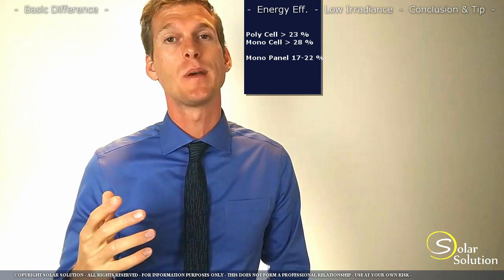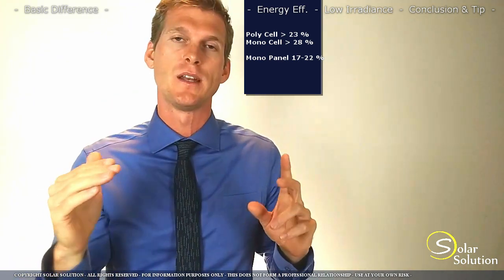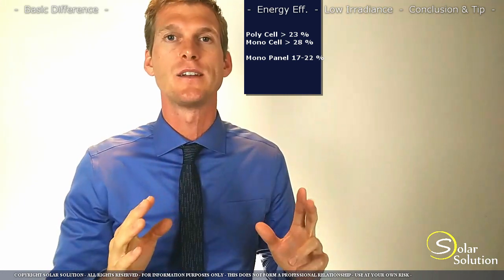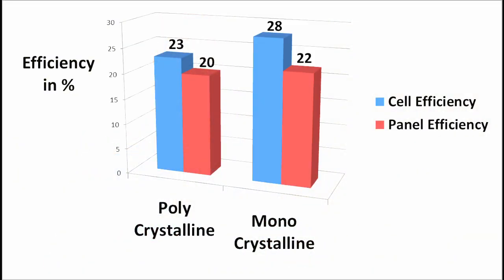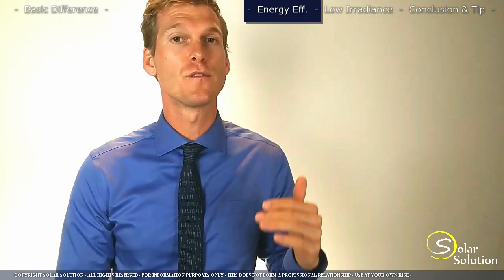In order to make a polycrystalline panel you just take the original square cells and use them to build the panel. Now the same is true as for the monocrystalline, so the overall efficiency of the panel is lower than the cells themselves and it roughly varies between 15 and 20%.